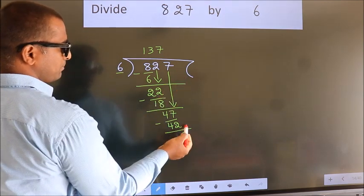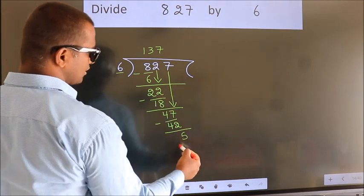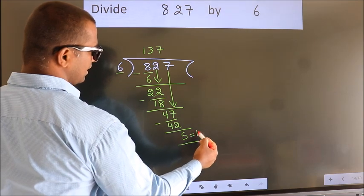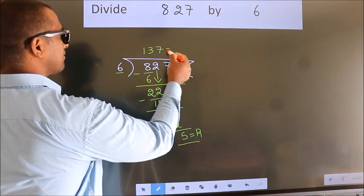No more numbers to bring down, so we stop here. This is our remainder. This is our quotient.